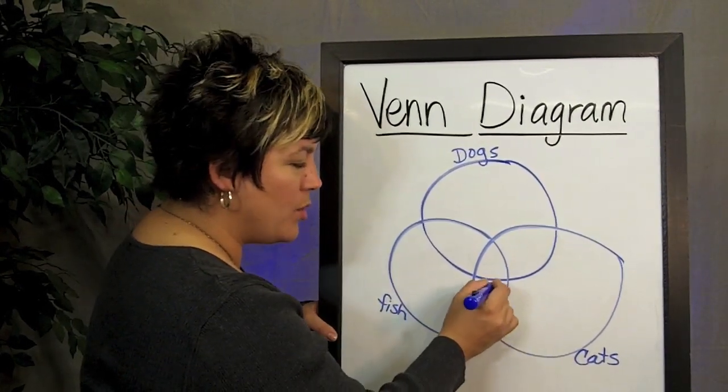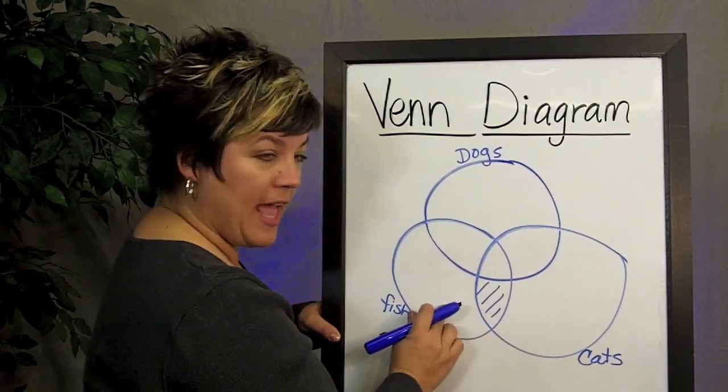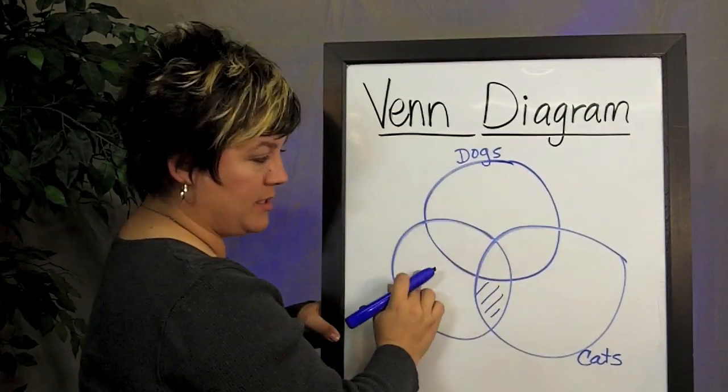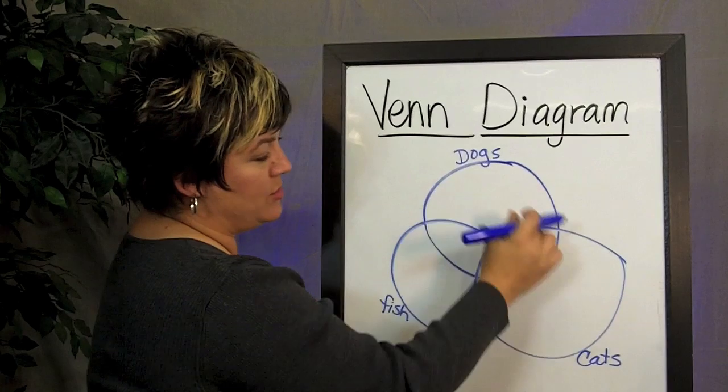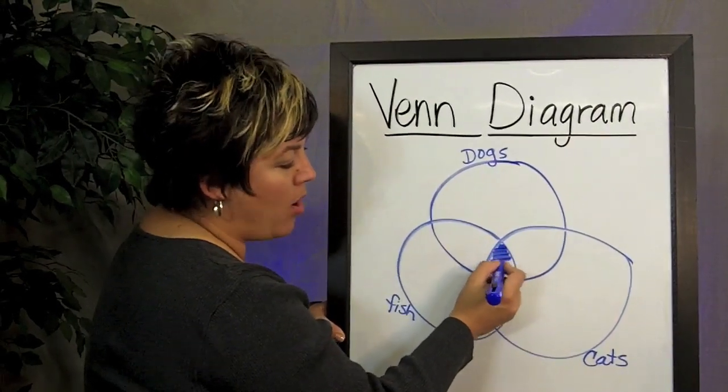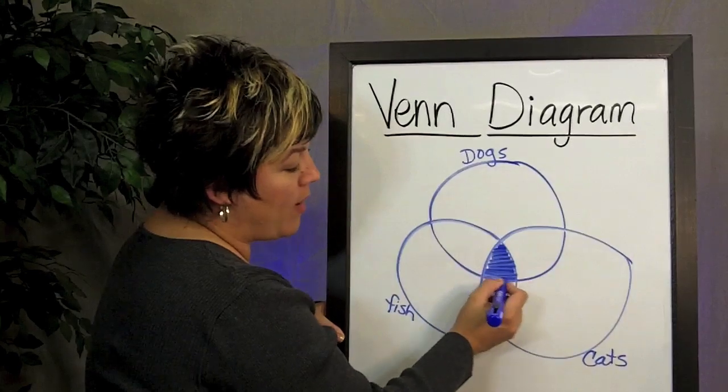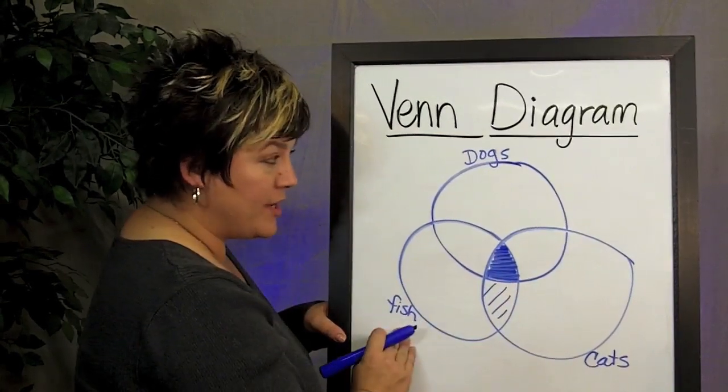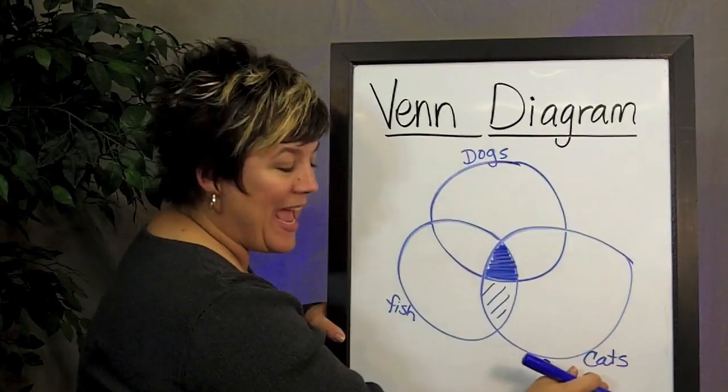But I've also got some who like fish and cats. I've got some who like dogs and fish, and some that like cats and dogs. But here in the center, I've got this small little area for anyone who happens to like fish and dogs and cats.